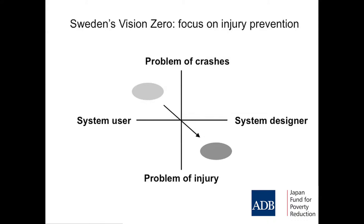Sweden's Vision Zero said: we've got lots of crashes and people using the system are causing them — and that's the way we've traditionally looked at road safety in most countries. Vision Zero and safe system say: let's rethink this. We're going to move from thinking about crashes and the users, to thinking about injury and thinking about the system designers and providers — the people who provide the roads, the cars, who make and enforce the rules, and take the land use planning decisions.